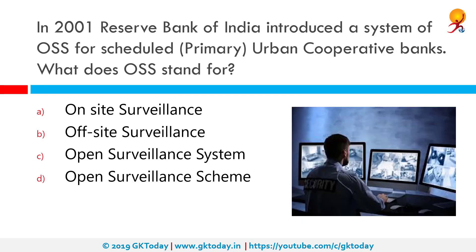In 2001 the Reserve Bank of India introduced a system of OSS for scheduled primary urban cooperative banks. OSS stands for off-site surveillance. The off-site monitoring and surveillance system was introduced to be effective from March 1996 but introduced in primary urban cooperative banks in 2001. This is a part of Returns on Statutory Returns called by the RBI under the Banking Regulation Act.